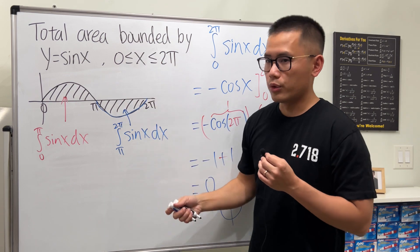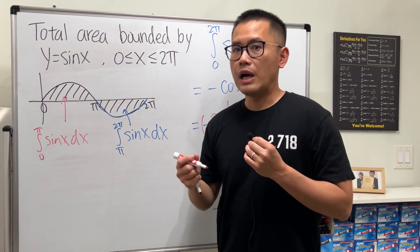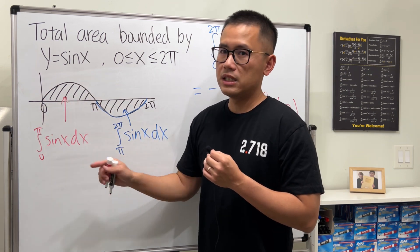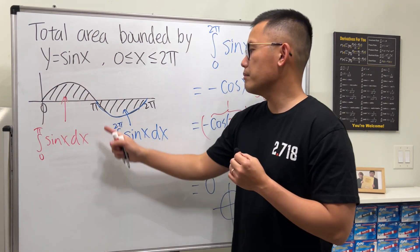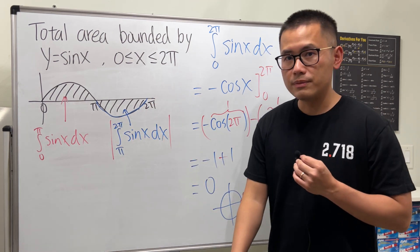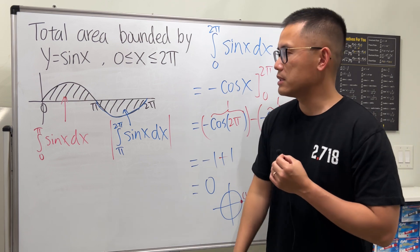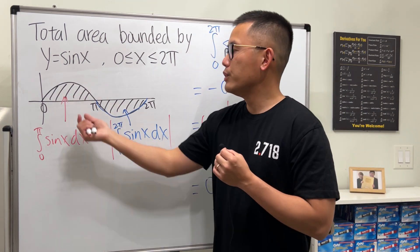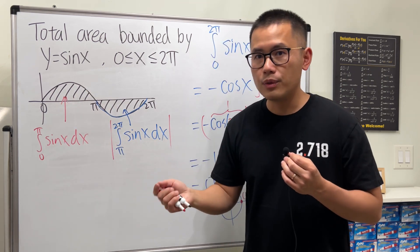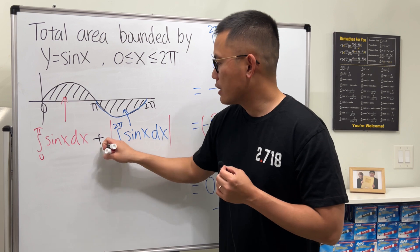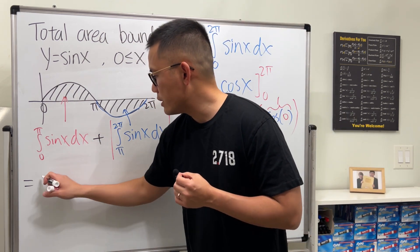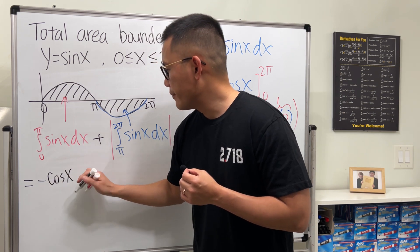So what do we do to find the total area? If a region is above the x-axis it's fine, but if it's below, you just put an absolute value around the result. Another way: since both regions are the same size, you can compute just the integral from zero to pi and double it. I'll show you the first approach here.